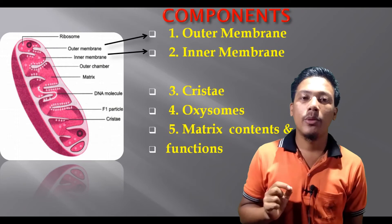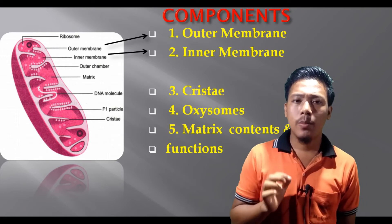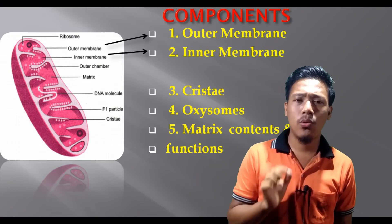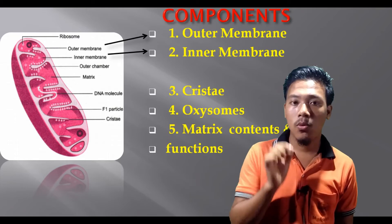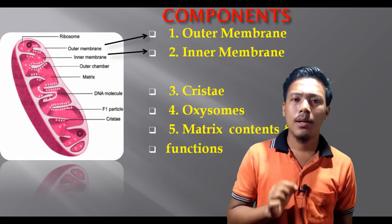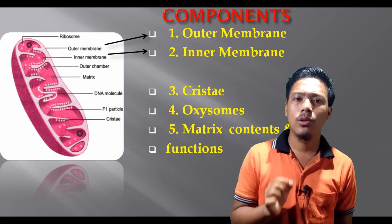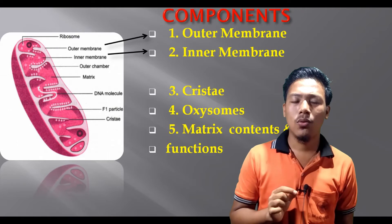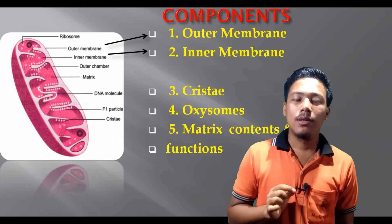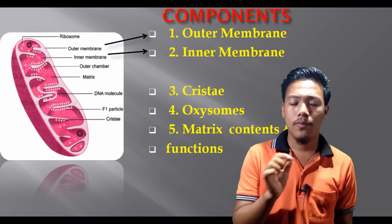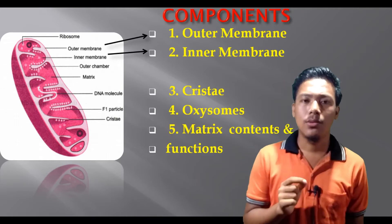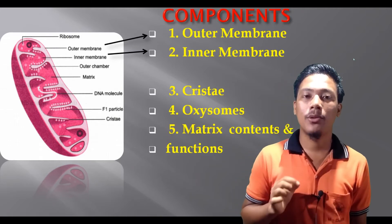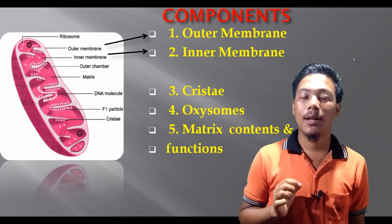The outer membrane has freely permeable regions and also contains enzymes. It also has more than the central functions — including ADP intake and ATP release. So that is the function of the outer membrane. The inner membrane is very rich in protein and enzyme.